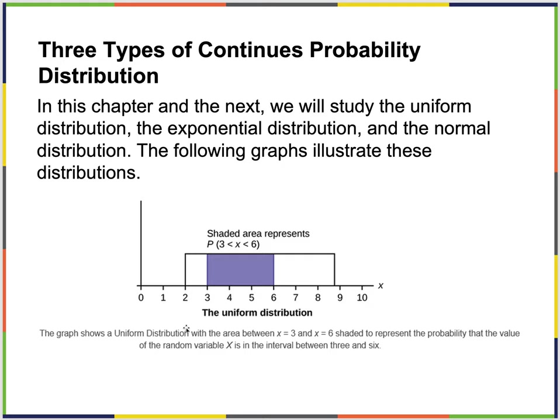There are three types of continuous probability distributions we're going to study. In this chapter, we'll study the uniform distribution and the exponential distribution. Then in the next chapter, Chapter 6, we're going to do the normal distribution.